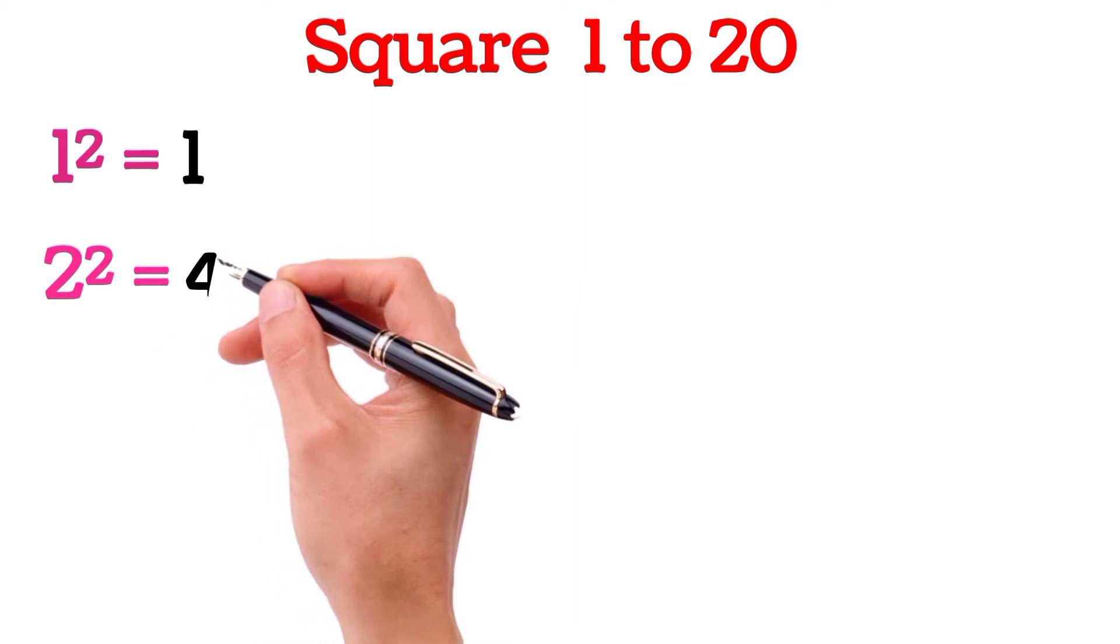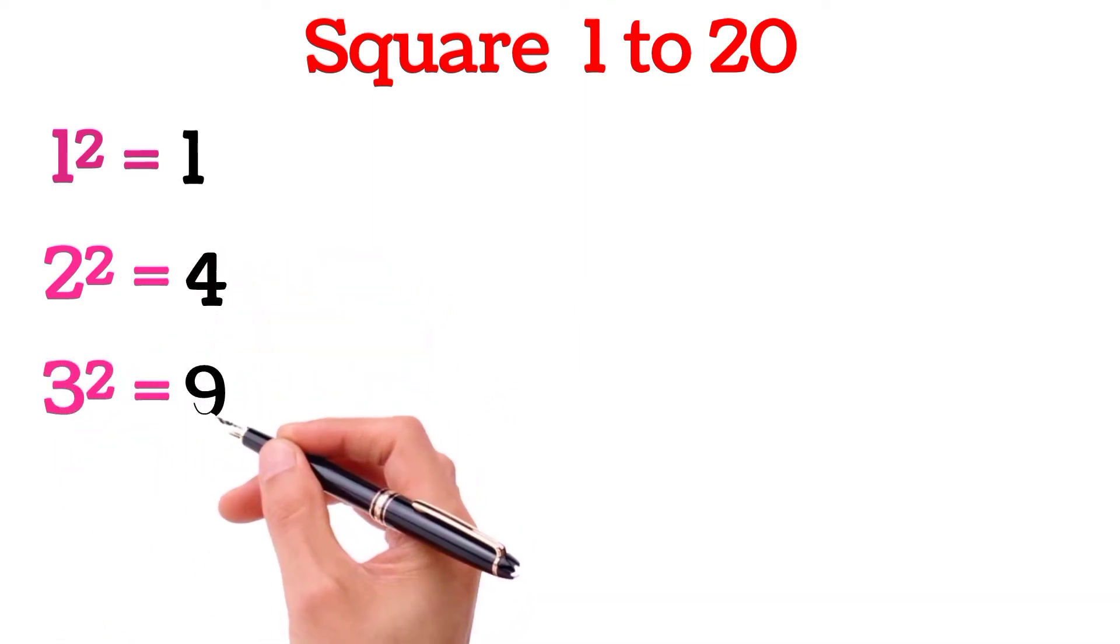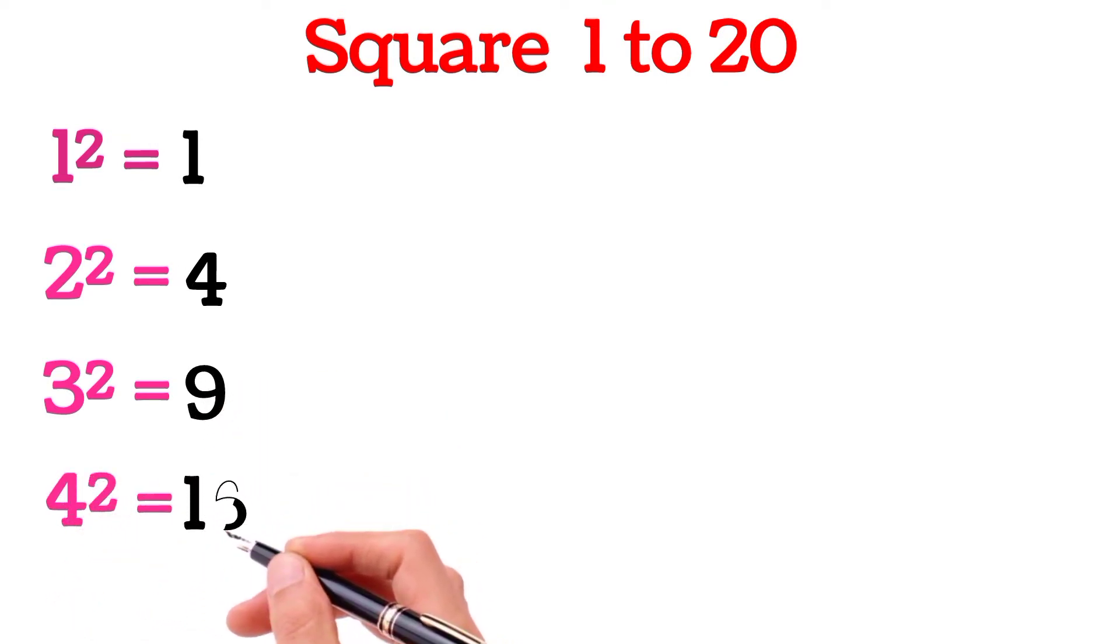2 squared equals 4. 3 squared equals 9. 4 squared equals 16. 5 squared equals 25.